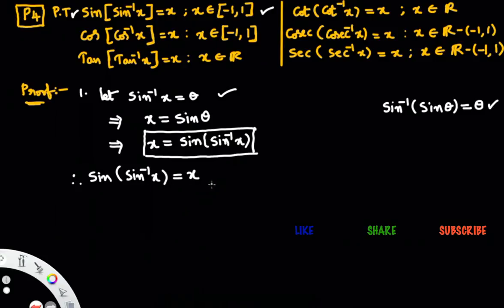Similarly, we can prove all other results. I want to prove one more result — I'll prove the third result. To prove tan of tan inverse x equals to x.